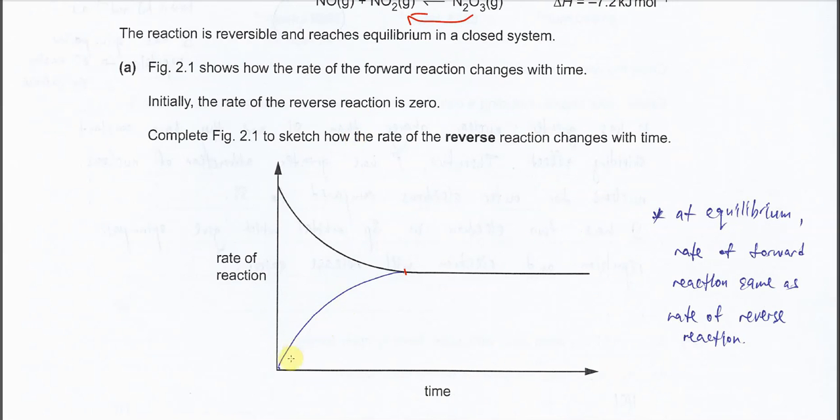When N2O3 is formed, it will start to go backwards and form NO and NO2. So what we expect is it starts from the origin. When there is N2O3 that forms from time to time, the backwards reaction, the reverse reaction, will increase until the point that it meets with the forward reaction. Because we know that at equilibrium, the rate of the forward reaction must be the same as the rate of the reverse reaction.